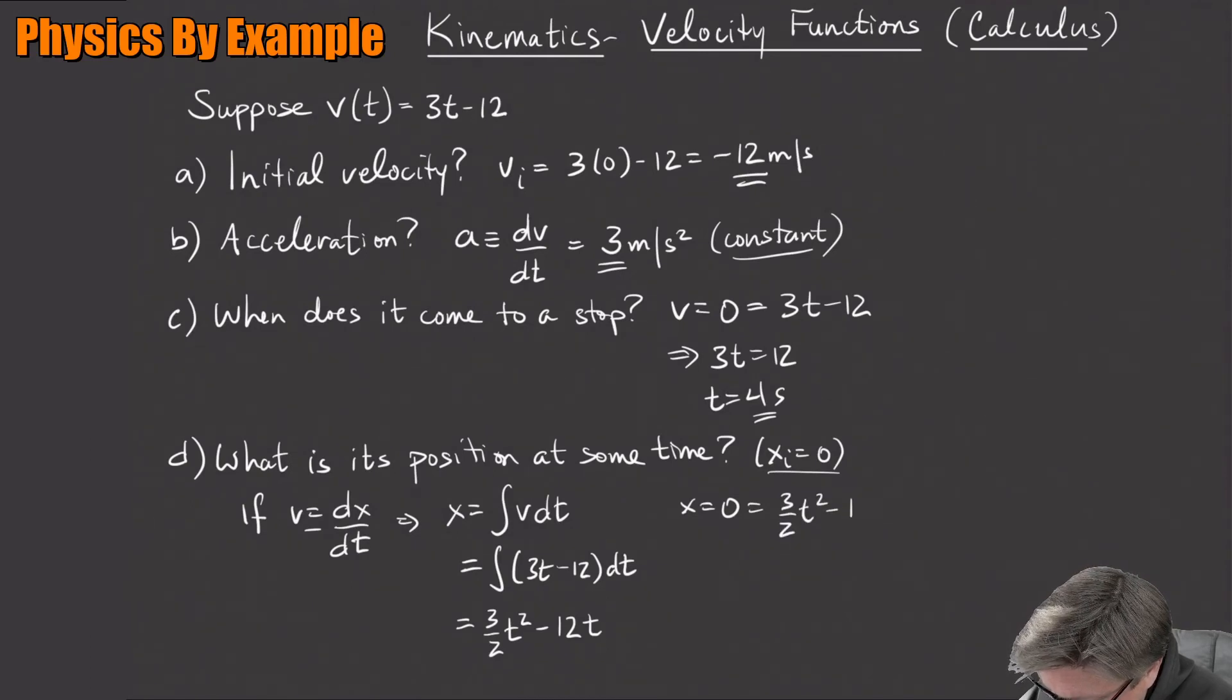3 halves t squared minus 12t. I want to solve at what time is this thing back at the origin. One solution is that we can factor out a t, so t could equal 0. But that's the obvious answer. At t equals 0 it's at the origin, that was our initial condition. So we want the other solution.